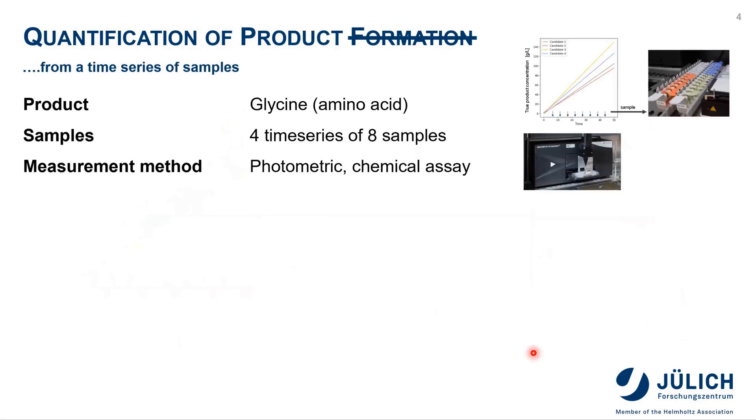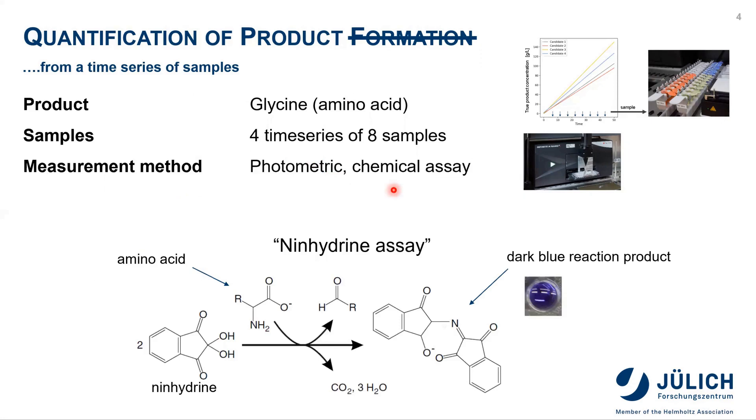Going on with this thought experiment, let's imagine that our product would be an amino acid, for example glycine. We have four candidates, four independent time series that we want to characterize and each has eight samples. We have to come up with a measurement method to quantify our product. In the case of an amino acid, this could be a photometric chemical assay. The problem is we can often not measure amino acids directly, so we use the so-called ninhydrin assay. The substance ninhydrin is reacting with the amino acid to form a dark blue reaction product. This blue dye we can now measure by absorbance in a so-called photometer. Here we have a possibility to quantify the amount of product we have.